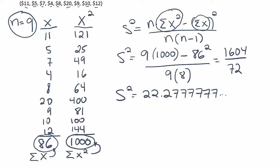However, before we do that, I want to go ahead and calculate s. So remember, s is just the square root of the variance. So since the variance was 22.277777, I'll just put all of that under the square root and get my answer for s.